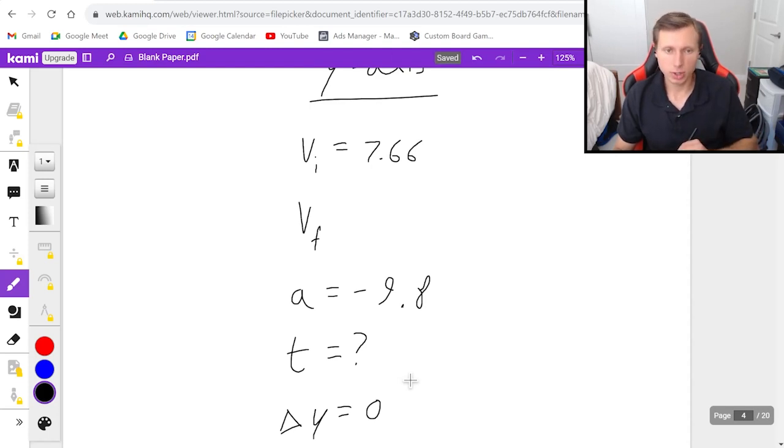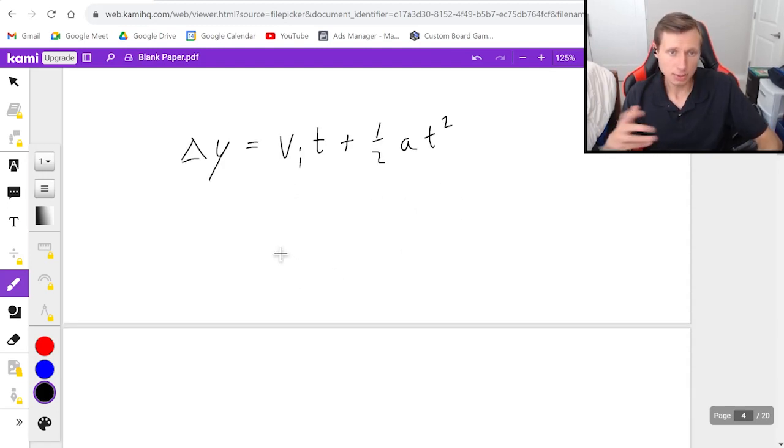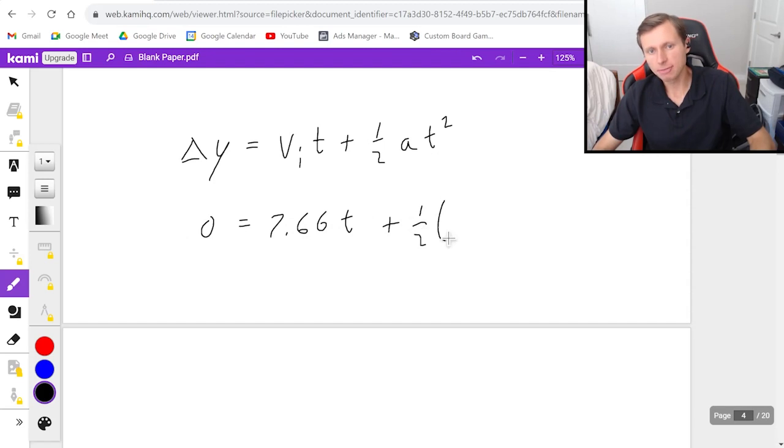And I'm going to be using the equation that doesn't have v final in it. That's this one. Delta y or delta x equals v initial times time plus one half at squared. And now we just got to plug in the variables. So delta y, zero, equals 7.66t plus one half times negative 9.8 times t squared. And now simplifying this, we're going to get zero equals 7.66t minus 4.9t squared.